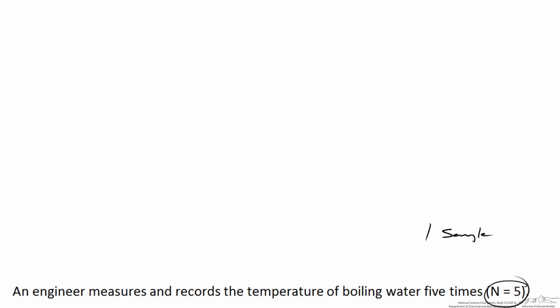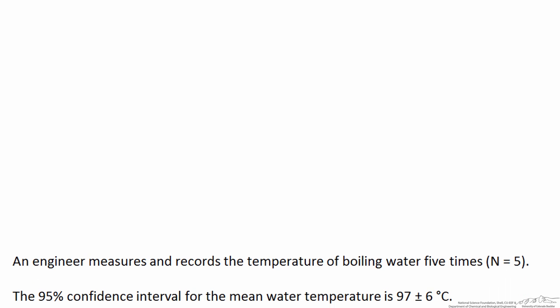Don't confuse the number of measurements with the number of samples collected. So we collect those data, and you had five of them. The engineer reports, well, the 95% confidence interval for the mean water temperature is 97 plus or minus 6 degrees C.